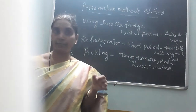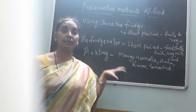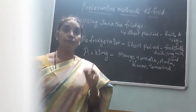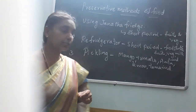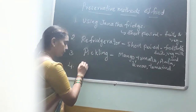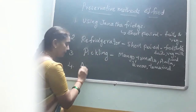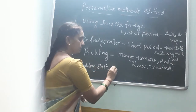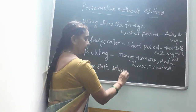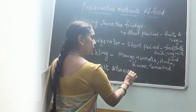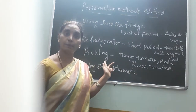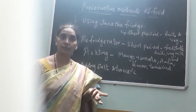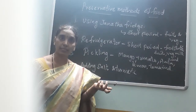Next, adding salt and turmeric. Before pickling, you can also add salt and turmeric to preserve certain vegetables. You can preserve them by adding salt and turmeric. In the pickling process, you add salt, turmeric, chilli powder, and oil. These are the items used in the pickling process.